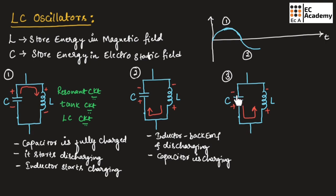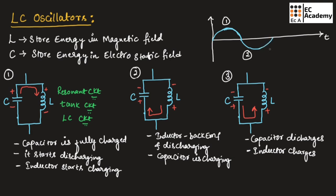In the third step, once the capacitor is fully charged again, the capacitor starts discharging and the inductor starts charging. The capacitor discharges in the opposite direction since the polarity has changed, and the inductor starts charging. This process continues — once the inductor is fully charged, it produces back EMF and starts discharging in the opposite direction while the capacitor starts charging. This process continues to produce a sinusoidal waveform as shown in the figure. This is how the tank circuit operates.